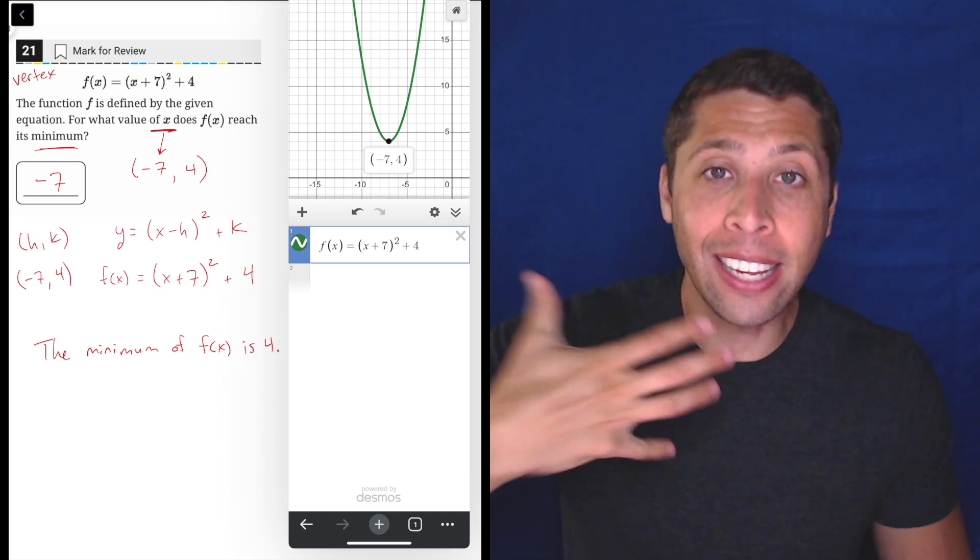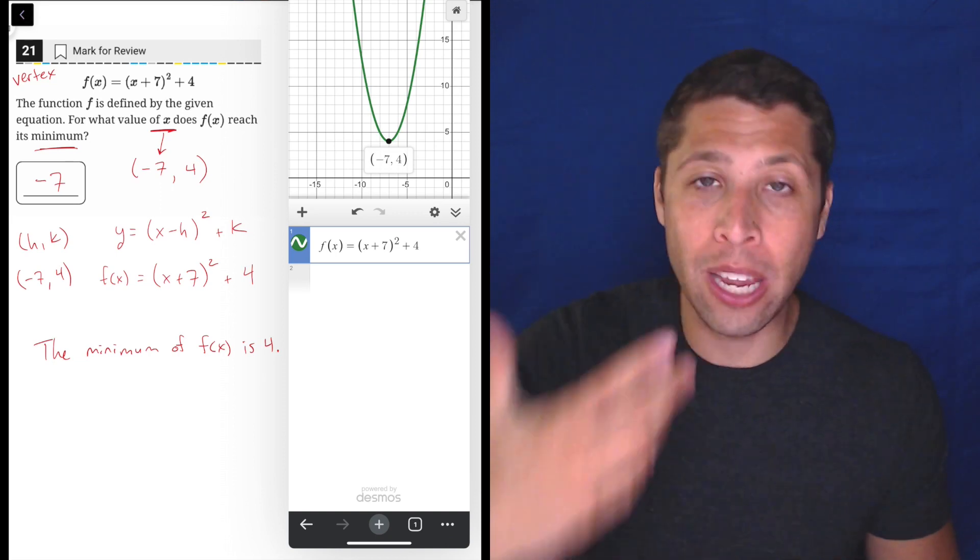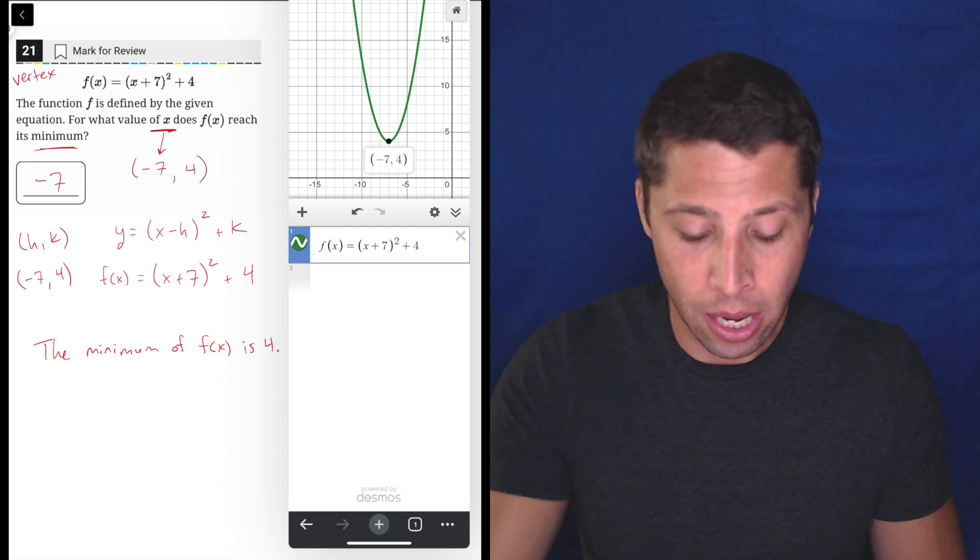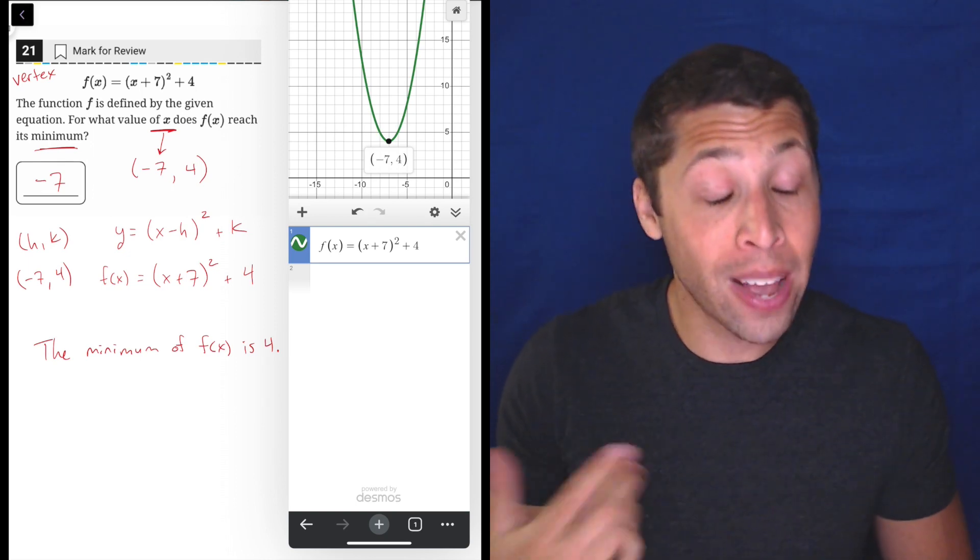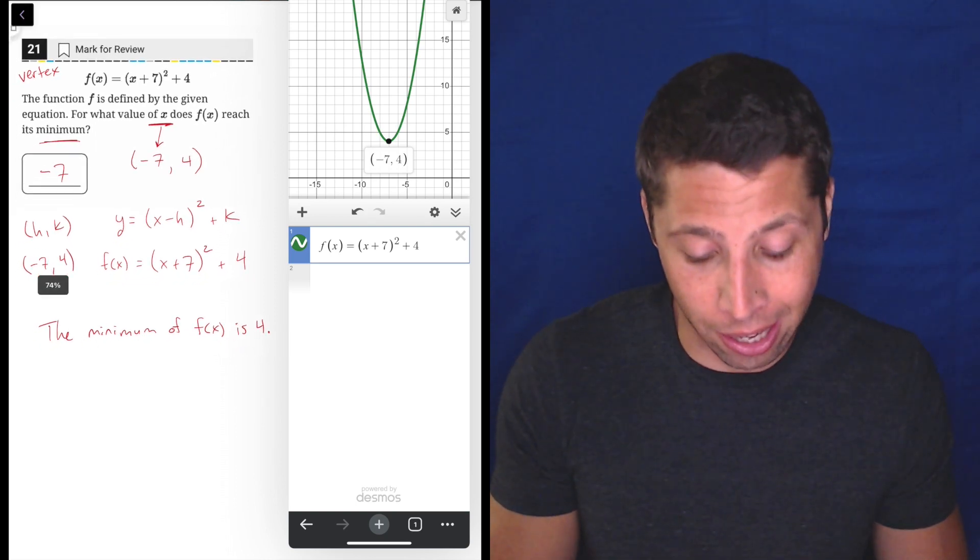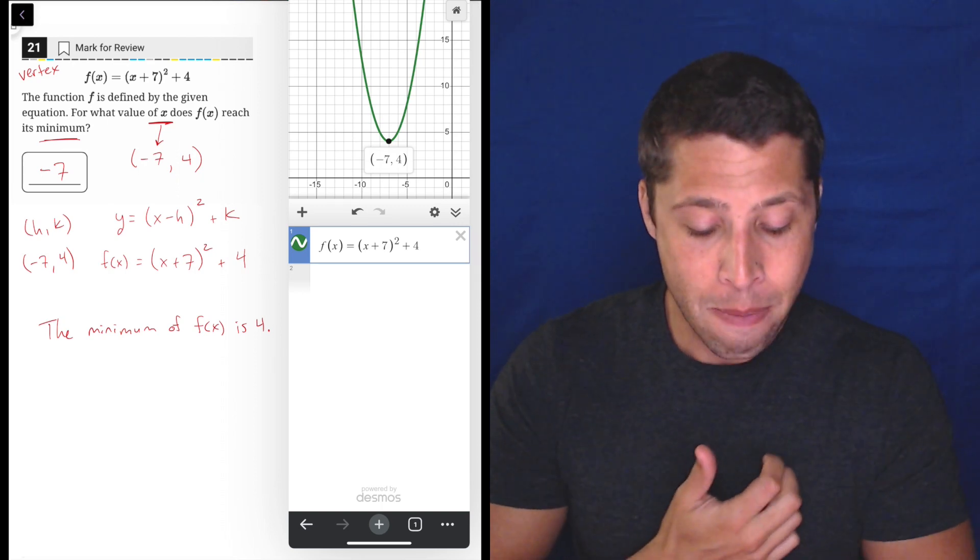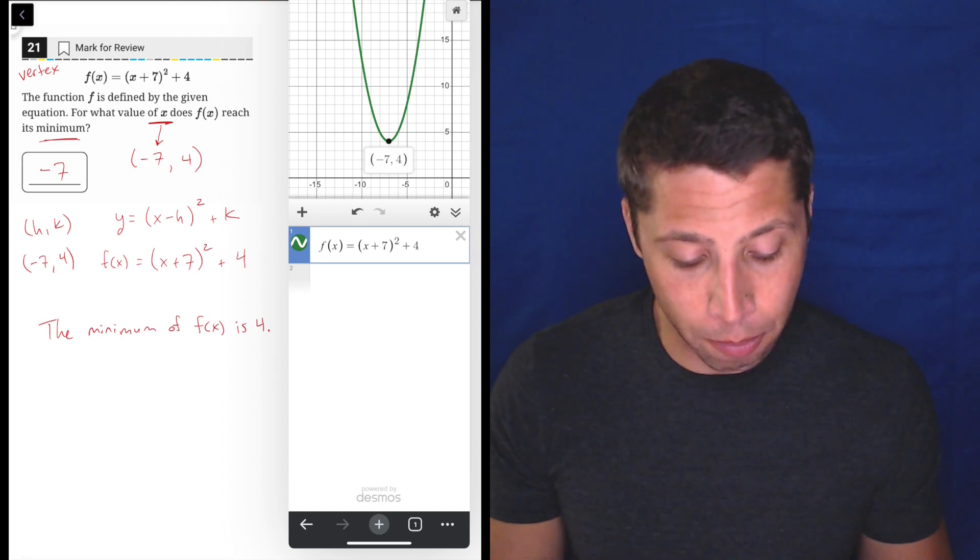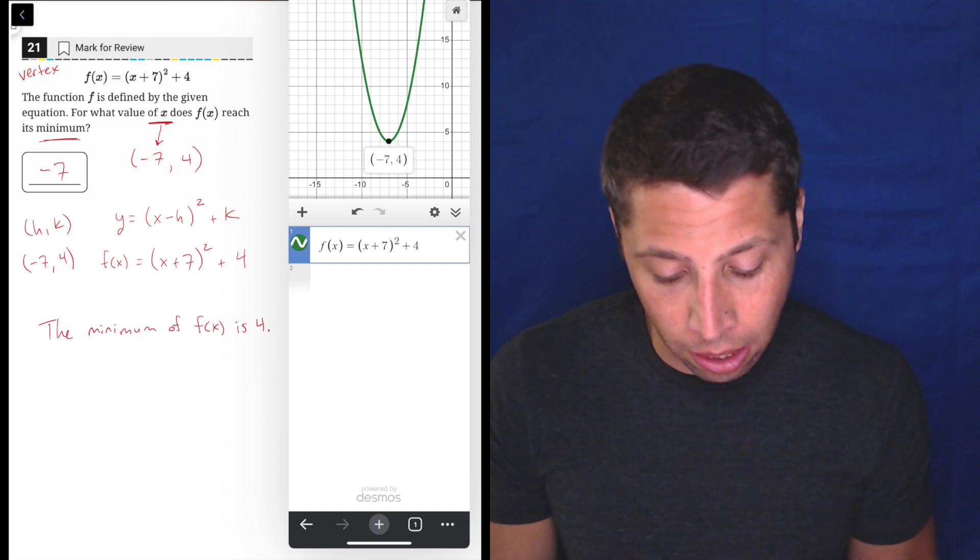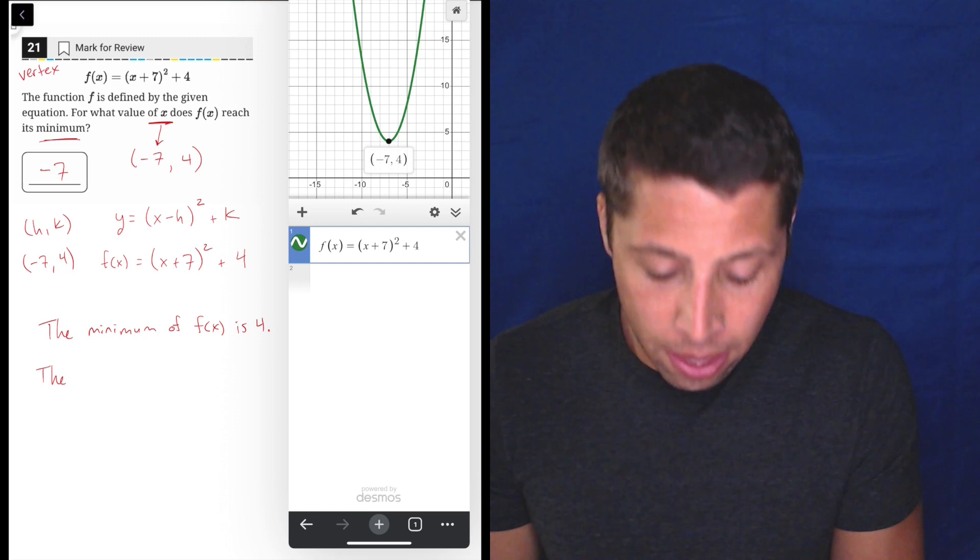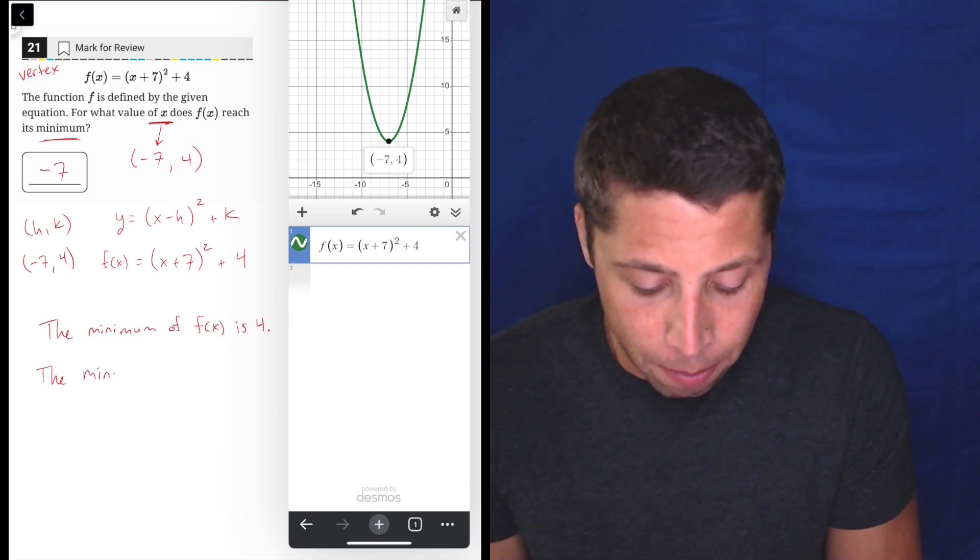And that, I think, is just what we naturally think of when we hear words like minimum and maximum, like what is that level that it gets to? That is not what they're asking for. In fact, that's usually not what they're going to ask for. They want it in a different way. And so the question is clear about it, but I understand why people might get this wrong by doing the wrong thing. So just to be clear, the minimum of f(x) is four.